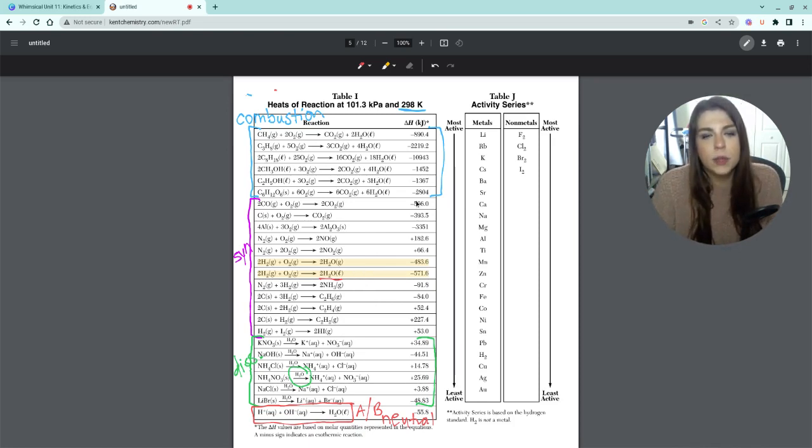And then when it comes to this, for the most part, like your year one chemistry students are just going to be manipulating these reactions as it is. And then maybe your honors or pre-AP chemistry classes are going to be the ones doing those big Hess's law, adding them together type situations.